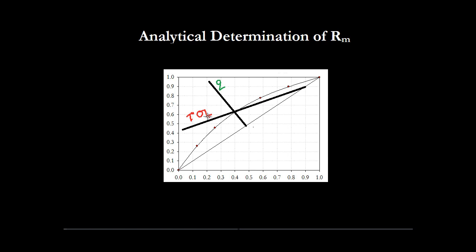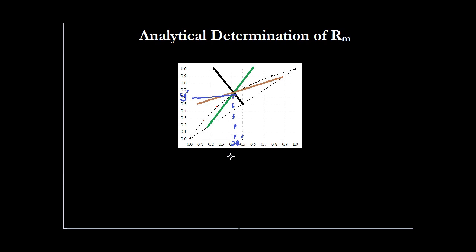The bottom operating line will also go through this intersection. So ultimately, the Q line, the top operating line, and the bottom operating line all intersect at the point where they cut the equilibrium curve of x and y. This point where these three equations coincide can be called x-dash and y-dash, and this point satisfies the top operating line, bottom operating line, and the Q line.